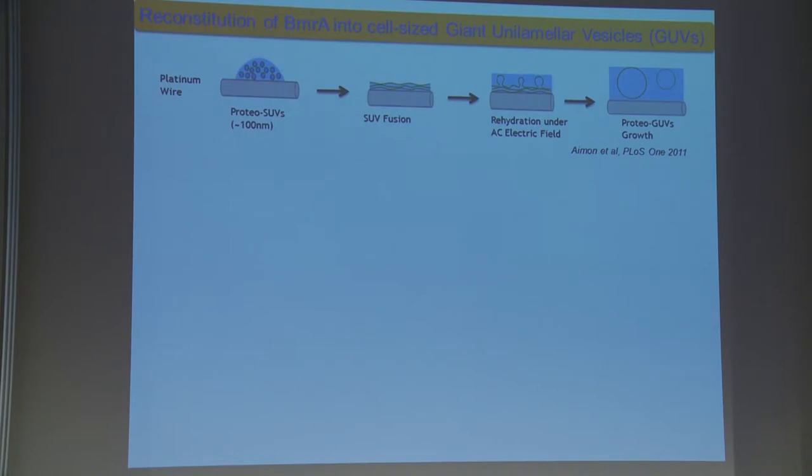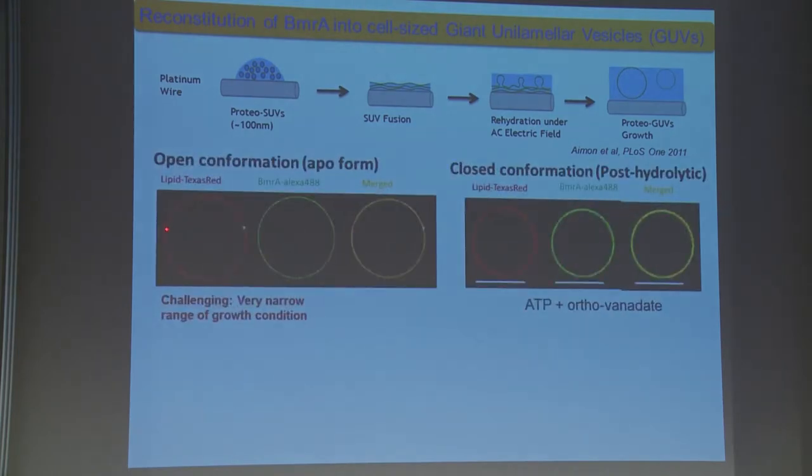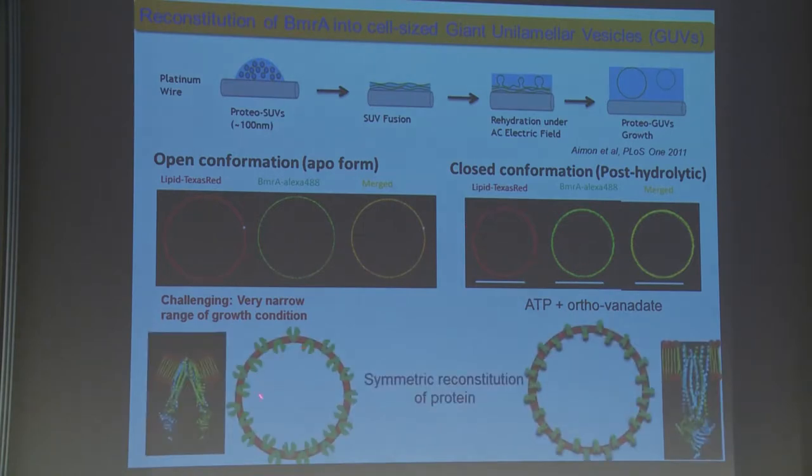First, I need to reconstitute my protein. We reconstituted open conformation—this is the most challenging task—and then we reconstituted closed conformation. I want to remind here that when we do reconstitutions by electroformation, we usually have both leaflets or symmetric reconstitutions of the protein in both cases. I'm going to use this symmetric reconstituted system.